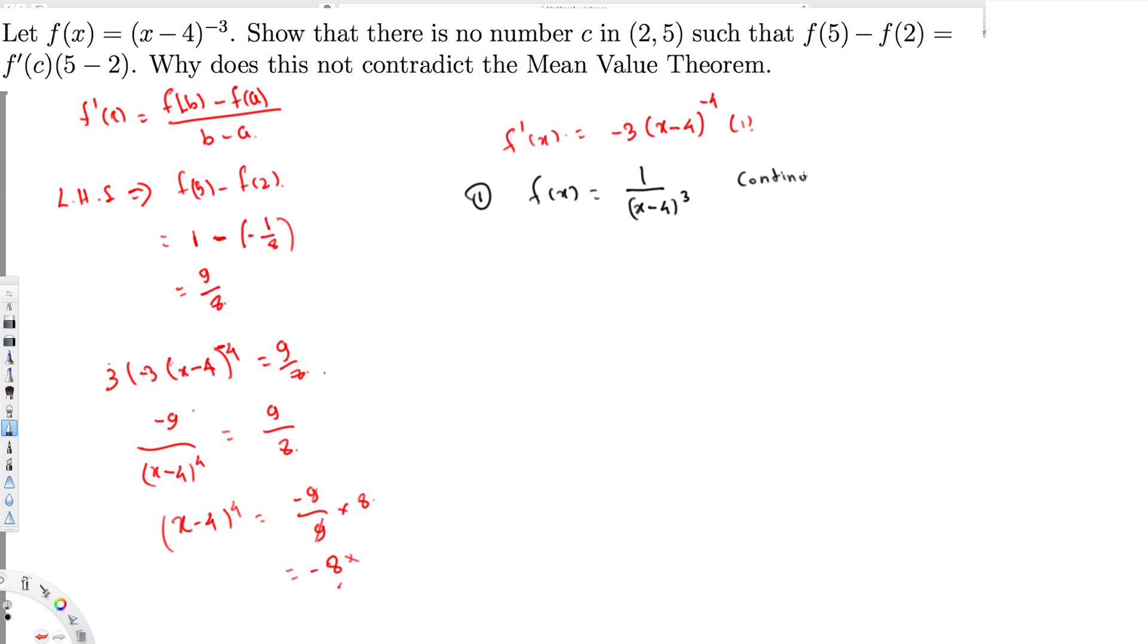Therefore, this does not satisfy the Mean Value Theorem. That's why this is not contradicting—because it's not satisfying the Mean Value Theorem, it's okay to not get a value for x. That's how we prove this. I hope you guys like this video. See you next time!